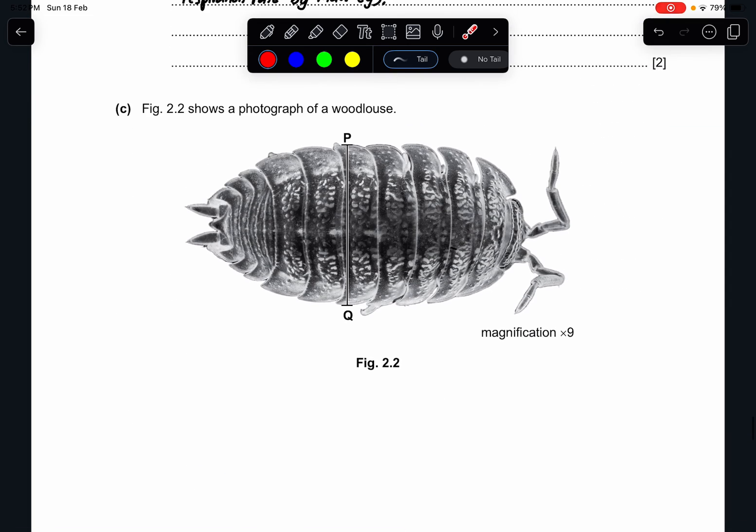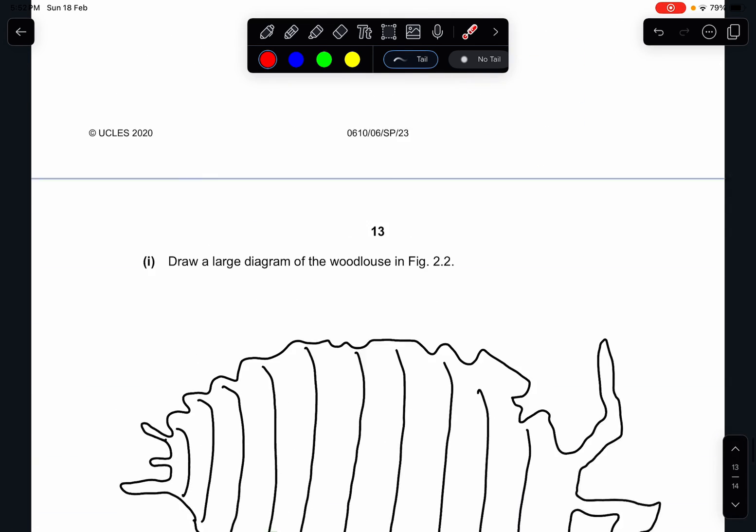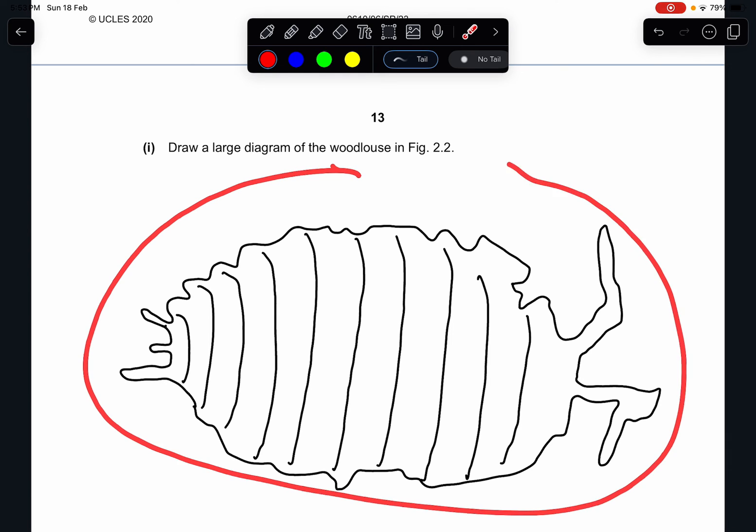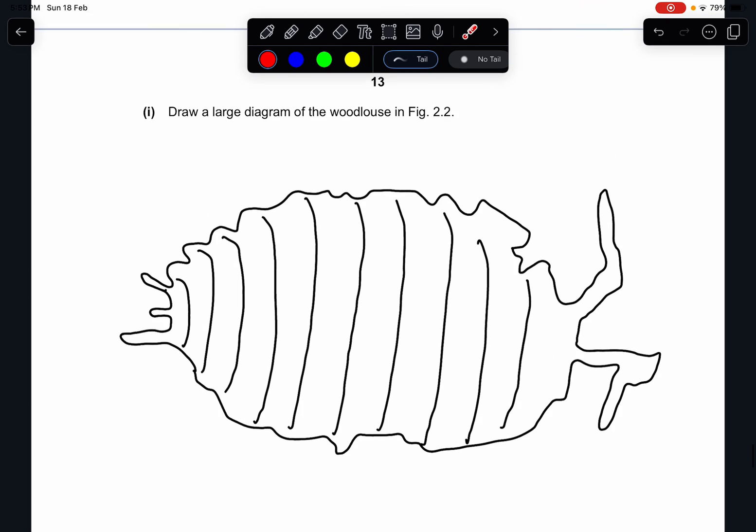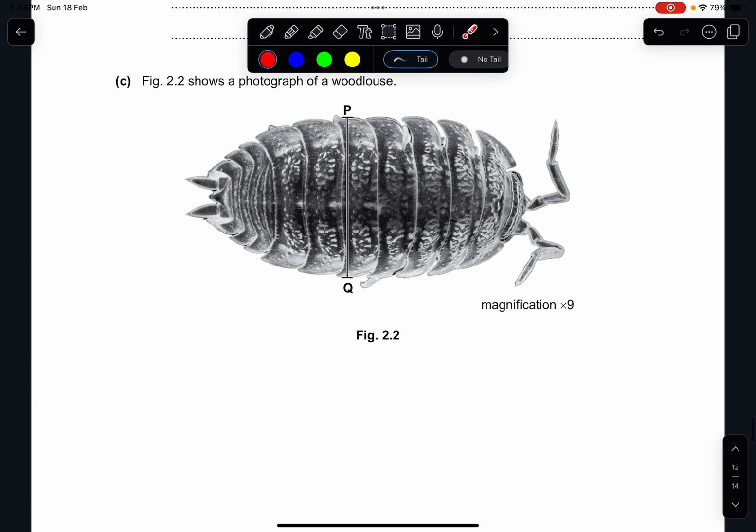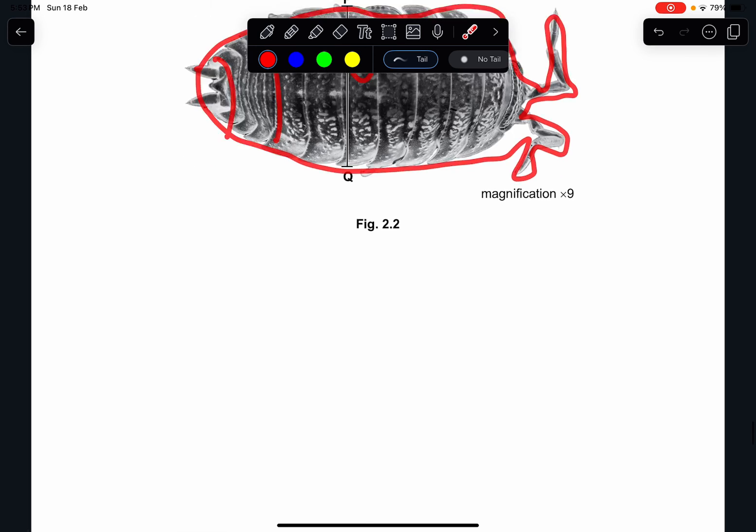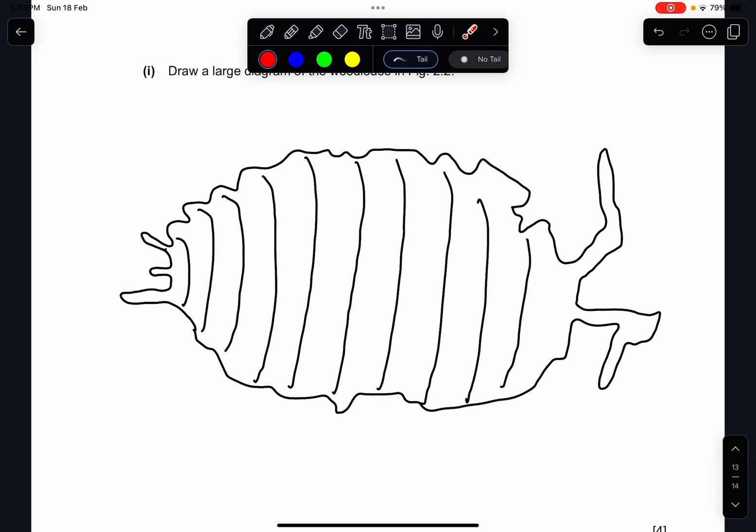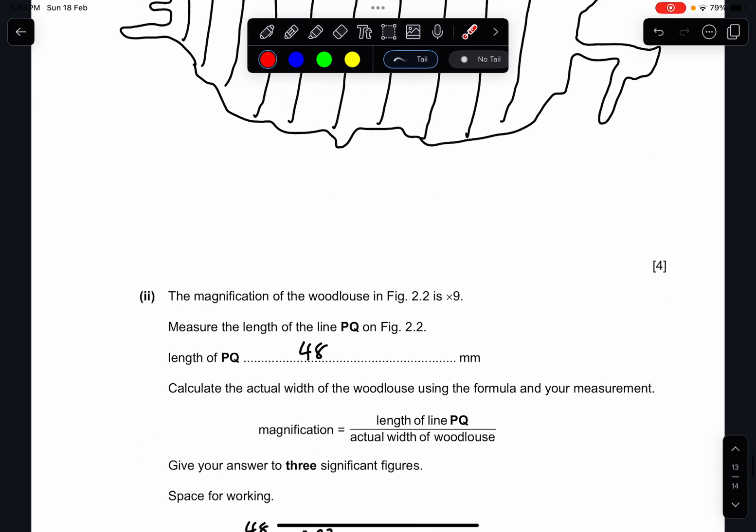C: Figure 2.2 shows a photograph of a woodlouse. It's P to Q with magnification of times 9. Part 1: Draw a large diagram of the woodlouse in figure 2.2. So just draw a big diagram, make sure it fills up the space and then just follow. You don't really have to follow this detail, just follow these lines. The outline of it, these two tails I would say. Basically the whole diagram, the antennae and then the middle lines, that's all.